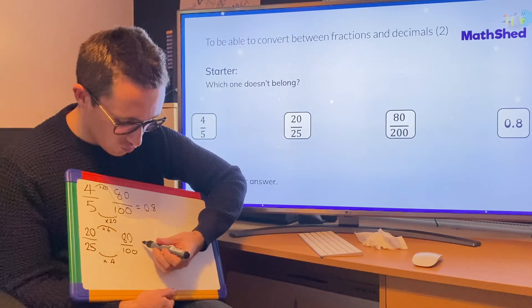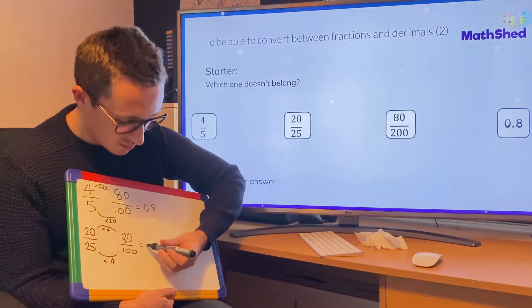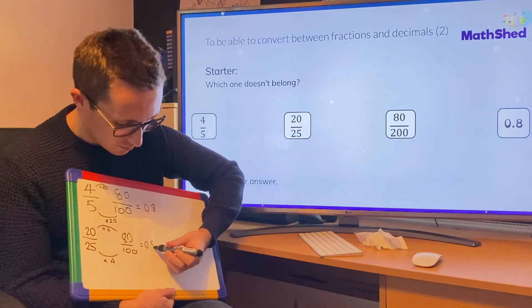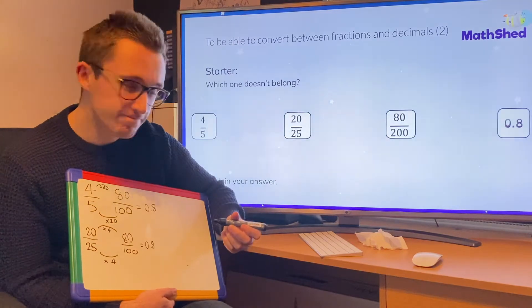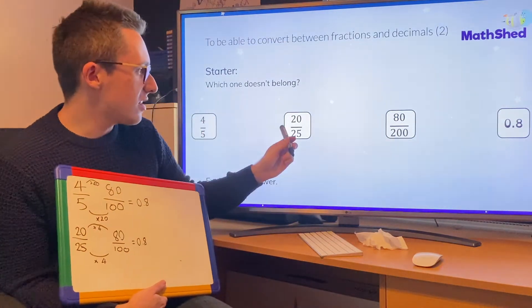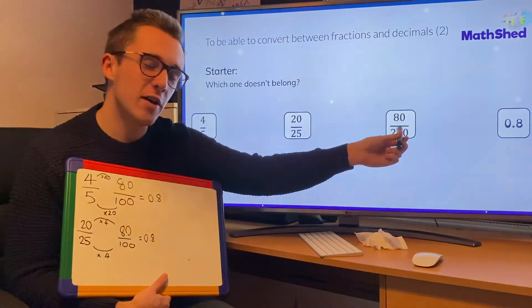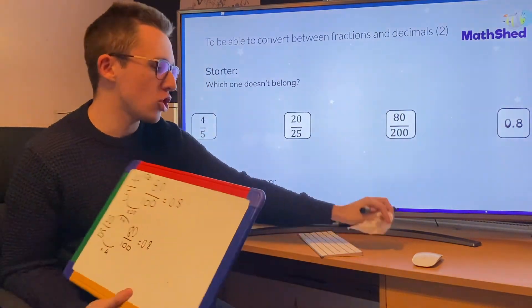20 times by 4 is 80. So once again, I've got 80 over 100, which must mean it's 0.8. So this is the same, this is the same, and this is the same, which must mean this is the odd one out. But let's just double check to make sure.